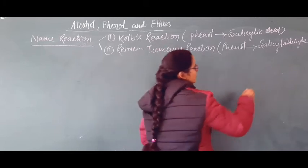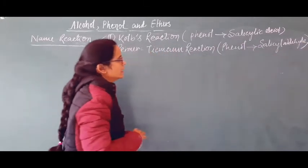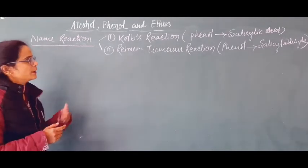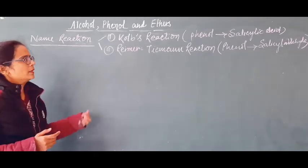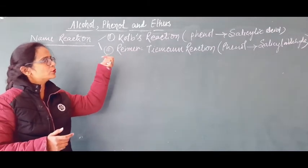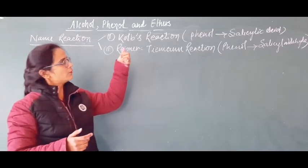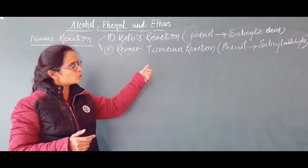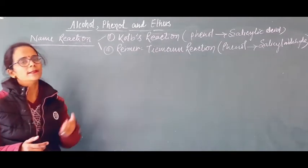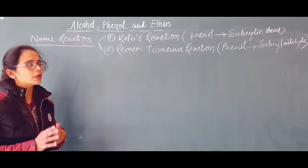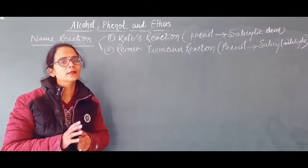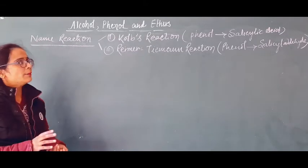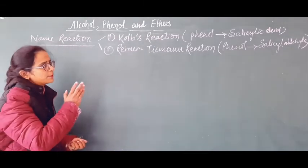So first of all, children, I told you about two name reactions — Kolbe reaction and Reimer-Tiemann reaction. As soon as you see these names, they should immediately strike your mind: Kolbe reaction is useful for converting phenol to salicylic acid, and Reimer-Tiemann reaction is useful for converting phenol to salicylaldehyde.